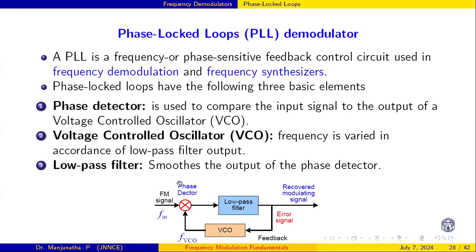A PLL is a frequency or phase sensitive feedback control circuit used in frequency demodulators and frequency synthesizers. A PLL has three blocks: a phase detector, a voltage controlled oscillator (VCO), and a low pass filter. The phase detector compares the phases of the FM signal and the VCO signal. The VCO is an oscillator that generates a frequency based on its input voltage. The low pass filter smooths the output.